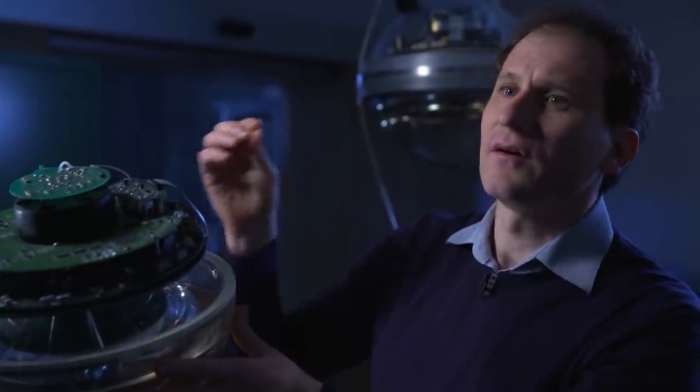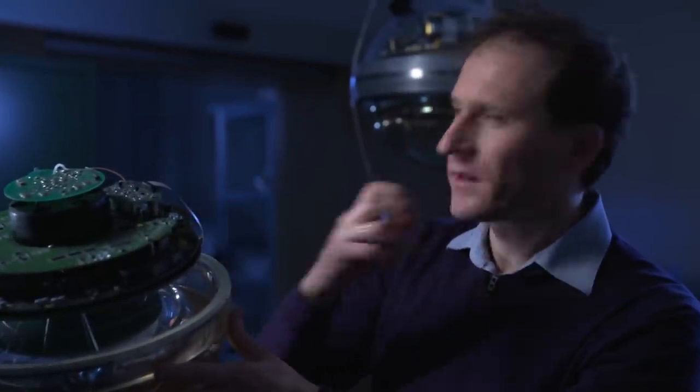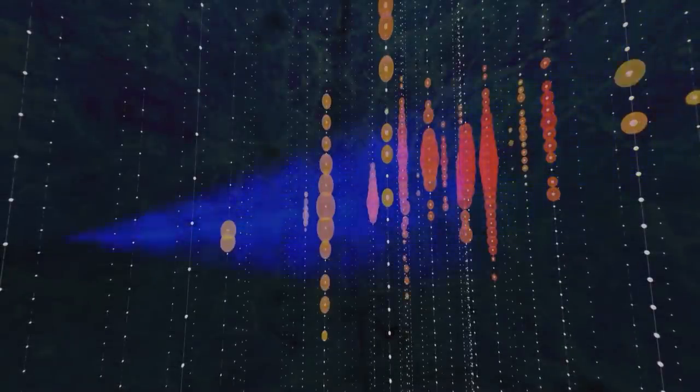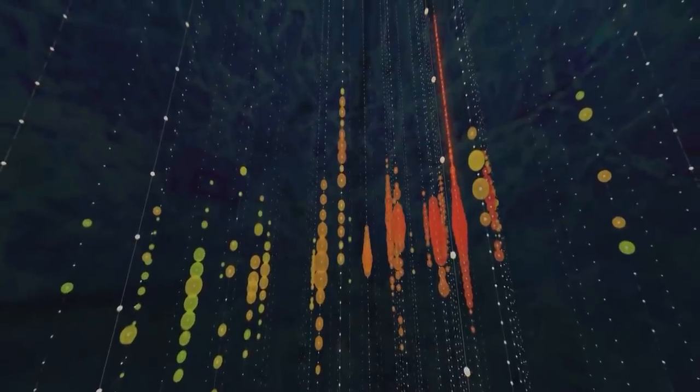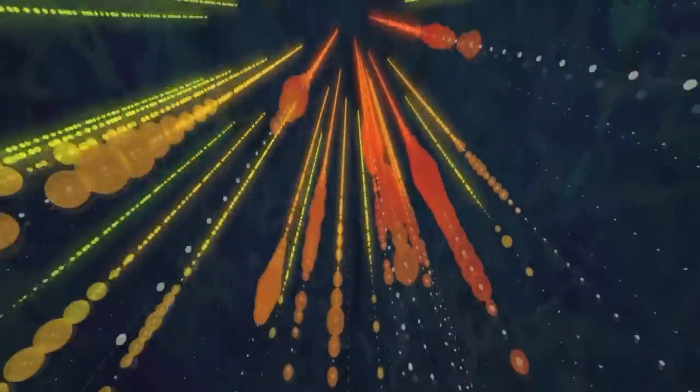And inside we have the electronic module which amplifies the tiny electrical current, digitalizes it, and then sends a signal to the IceCube laboratory on the surface. Thousands of synchronized sensors measure the precise time and strength of the light event and communicate the data.